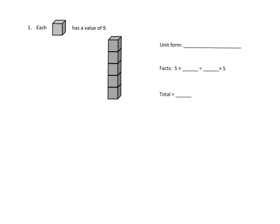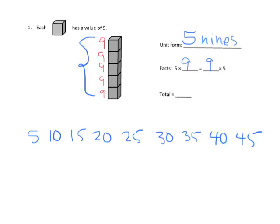Students hold up fingers as they skip count, tracking each step. Five times nine is 45, which means nine times five is also 45 — that's the commutative property. If they don't know one fact, they can do the other and get the same answer.